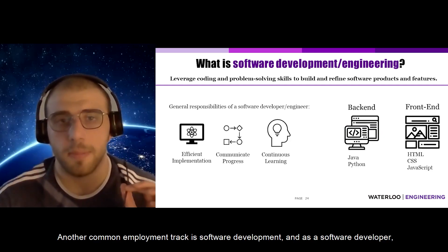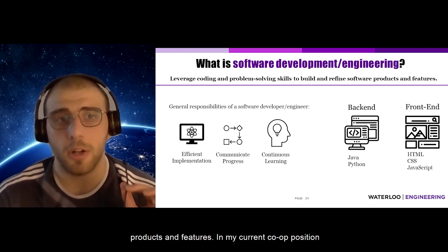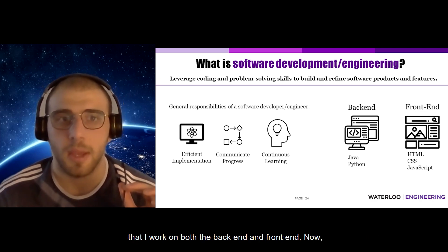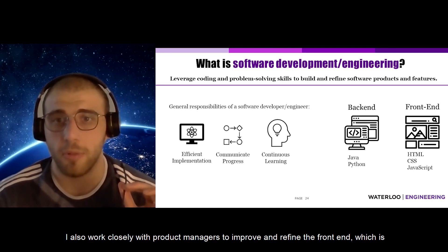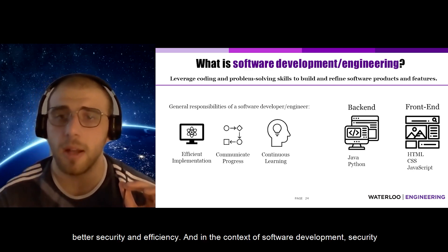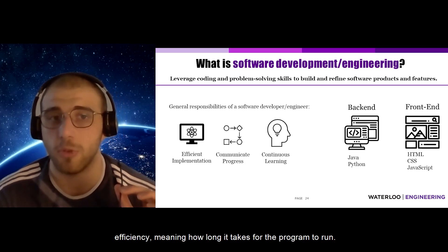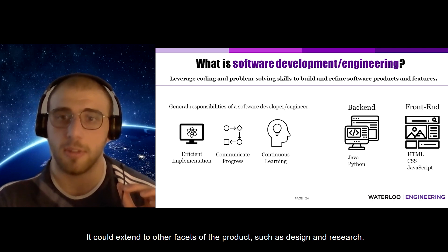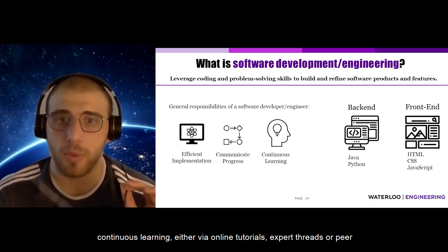Another common employment track is software development, where you leverage coding and problem-solving skills to build and refine software products and features. In my current co-op position, I'm working as a full-stack developer for an agricultural startup — full-stack meaning I work on both the back-end and front-end. In my day-to-day, I attend daily stand-ups to discuss progress and new features, work closely with product managers to improve and refine the front-end user interface, and work with fellow developers to refine the back-end for better security and efficiency. In a startup environment, the software developer role is typically more holistic and can extend to design and research. The most essential aspect is a commitment to continuous learning via online tutorials, expert threads, or peer programming.